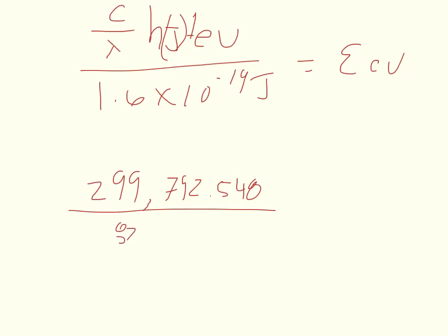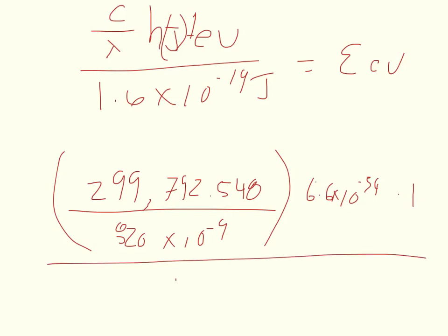And that will be one term. H will be another term, which is 6.6 times 10 to the negative 34th, times 1 electron volt divided by 1.6 times 10 to the negative 19th joules.